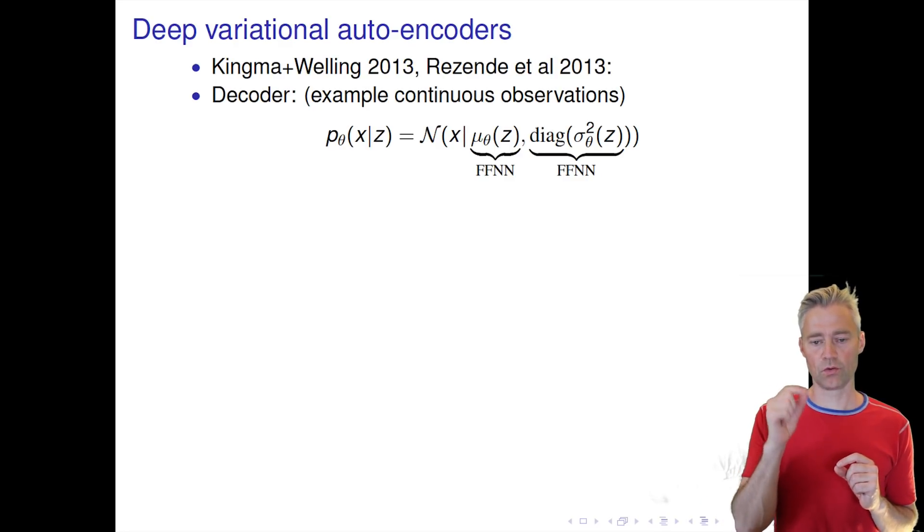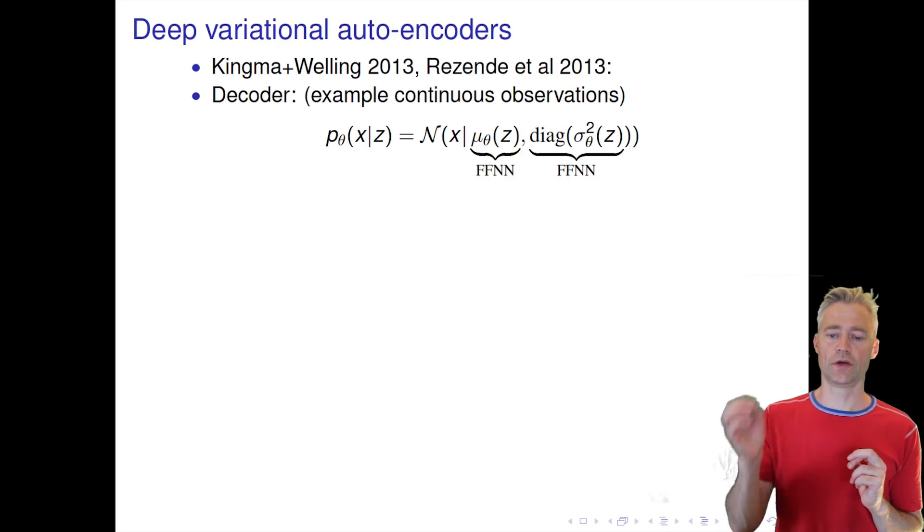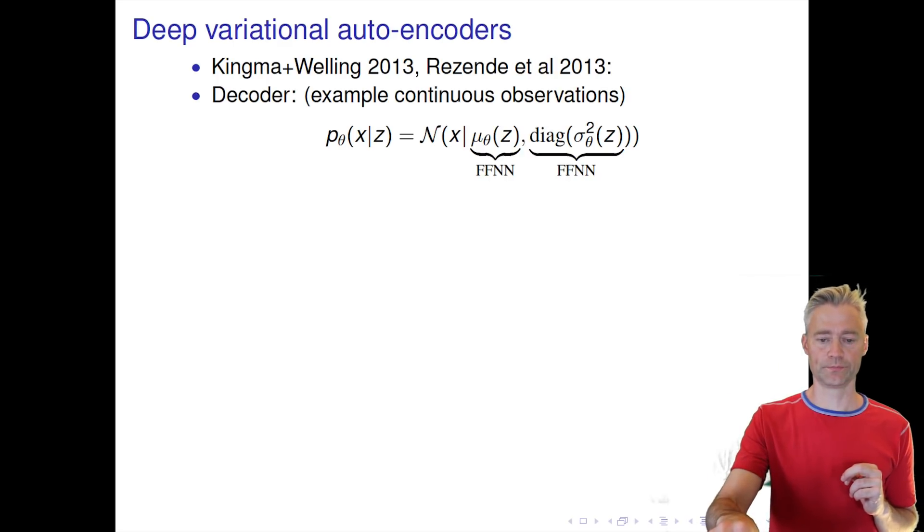So our neural network is now used as a mapping from c to a mean value and a variance value like this.